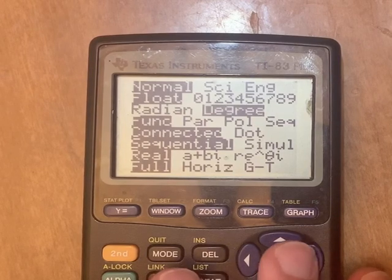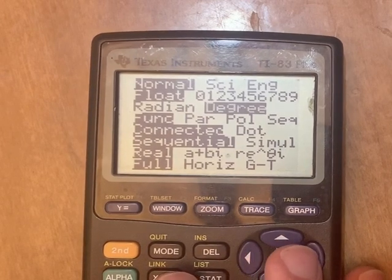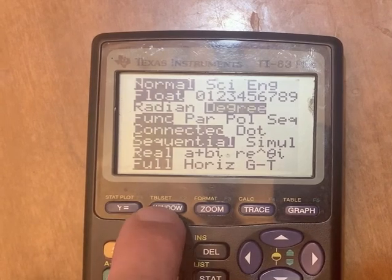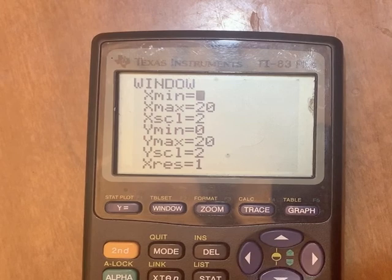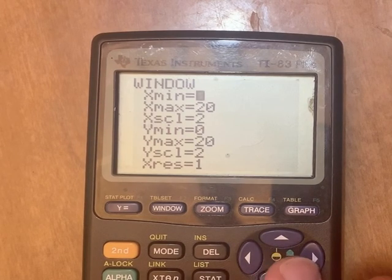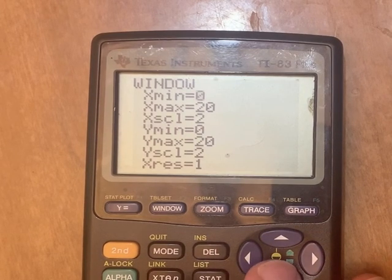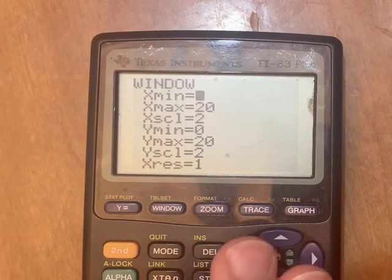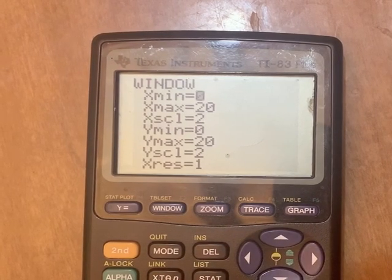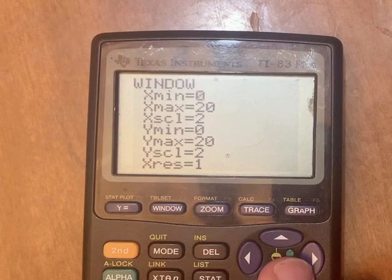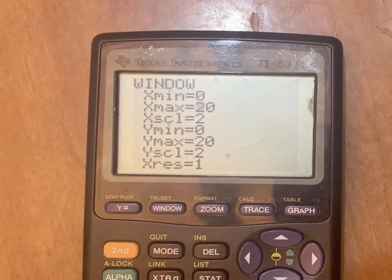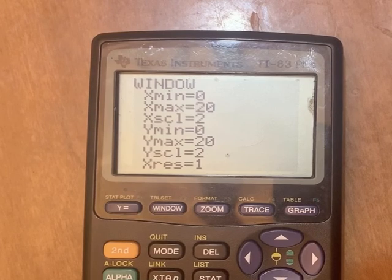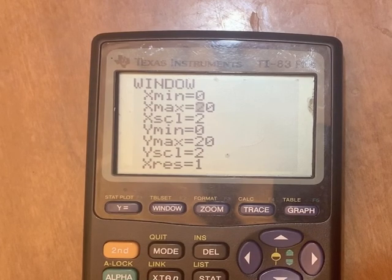And the rest of those settings probably don't matter for what we're doing today. If we press window, we definitely need to adjust our window so that we can see the right thing. The x number, that's measuring angle. We want to make sure that has at least one full rotation, probably two or more rotations. And so I'm going to suggest starting at zero and going to 360 doubled would be 720.